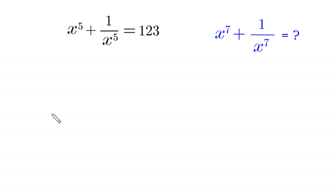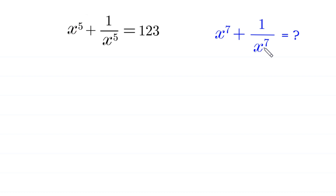Hello everyone, you are welcome. We will solve this very nice algebra equation: x to the power 5 plus 1 over x to the power 5 is equal to 123. Our job is to find all possible values of x to the power 7 plus 1 over x to the power 7.